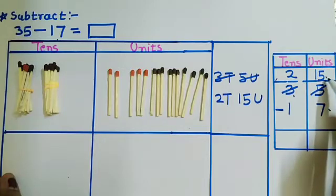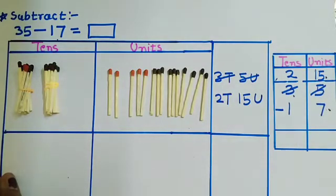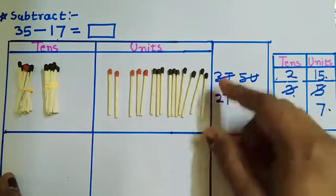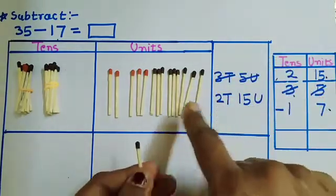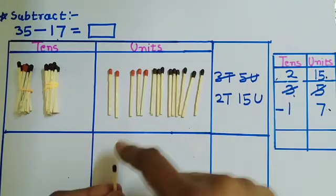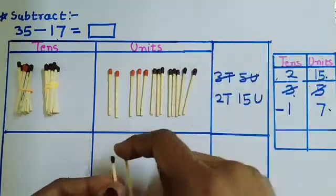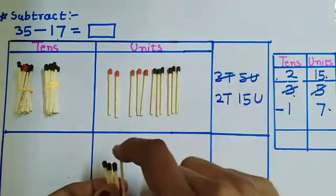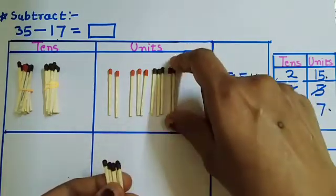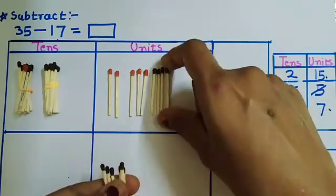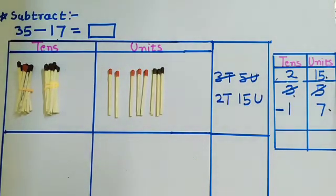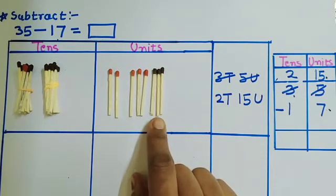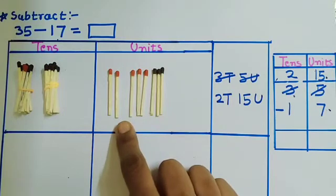Can you tell me, children — can we subtract 7 from 15? Yes, now we can subtract 7 from these 15 units. Let us take out 7 math sticks from the 15 math sticks: 1, 2, 3, 4, 5, 6, 7. Then how many math sticks are remaining in the unit column? 1, 2, 3, 4, 5, 6, 7, 8.